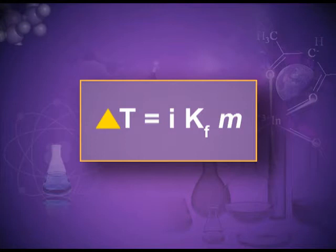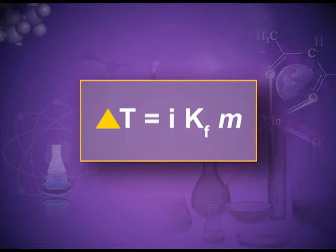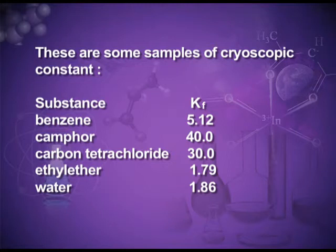Mathematically, ΔT_f = i·K_f·m. Delta T_f is the depression in freezing point, i is the van't Hoff factor, K_f is the molal depression freezing point constant — also known as the cryoscopic constant — with units Kelvin·kg/mol, similar to the ebullioscopic constant. Small m is molality — the number of moles of solute dissolved in 1 kg of solvent. Some sample cryoscopic constants: benzene is 5.12 K·kg/mol, camphor is 40, and water is 1.86. These values are normally given in numericals, but you should learn them for common solvents.